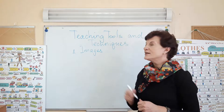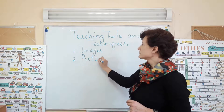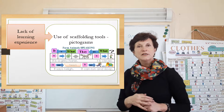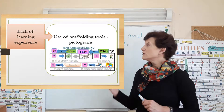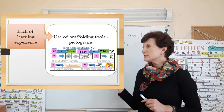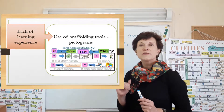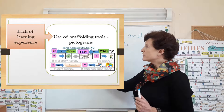After you have chosen the images, you can move to the use of pictograms. The use of pictograms is explained by the lack of learning experience in children. It is also important to remember that pictograms have to be used consistently. In our classes, we use the same pictograms for all stages of learning, and that is how we help children understand how a sentence is built.